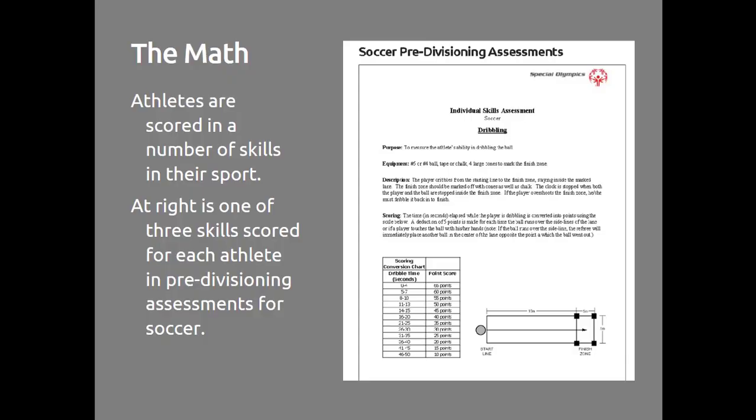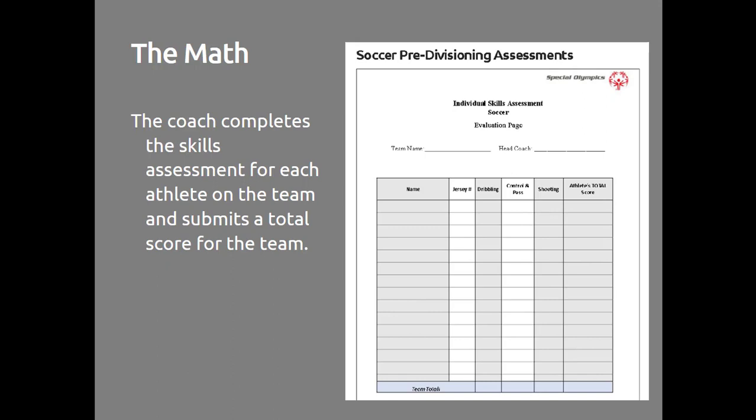In this example, we are looking at one of three soccer skills that a coach will score their athletes in. The athlete will be assigned a point score depending on the time it takes them to dribble a ball across a measured zone. Once the coach completes the three skills for each athlete on the team, they will complete the team evaluation page and submit a total score for the team to the tournament organizers.